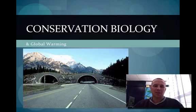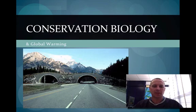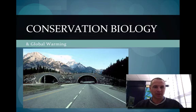Hey guys, it's Mr. Kennedy and this is the last video in our AP Biology series dealing with conservation biology, and I'm going to touch on global warming at the end. This picture here is one way that we have used conservation biology — this is actually a passageway over a man-made obstacle, the roadway, that allows wildlife to walk back and forth freely.